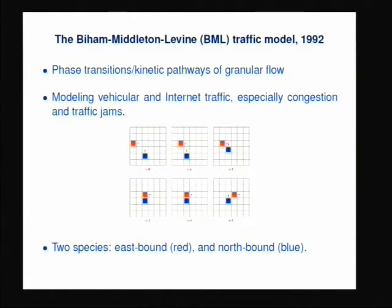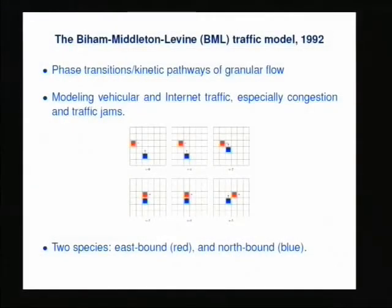This is a really simple and beautiful model — a model of cars moving on a lattice. There are two species of cars: red cars and blue cars. The red cars all try to move to the right and the blue cars try to move north. They alternate time steps — on even time steps, all the red cars try to advance one site; on odd time steps, all the blue cars try to advance one site. They live on a torus, so if you come off the top you come back on the bottom, et cetera.